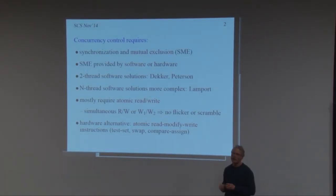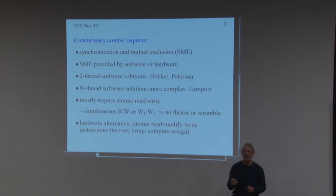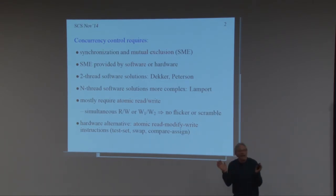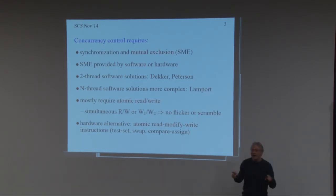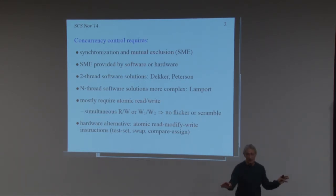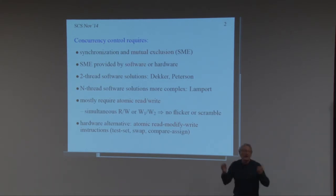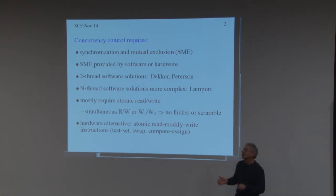The other hard thing in concurrency is mutual exclusion, which happens about once or twice a week in this building. You're walking down a hallway and you get to a doorway — a place where you don't want more than one person going through at a time. That doorway is called a critical section, and the algorithm that ensures you don't collide is called mutual exclusion — it protects the critical section.